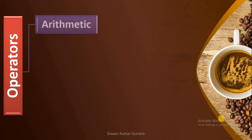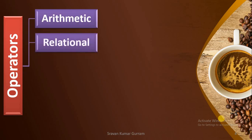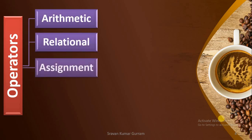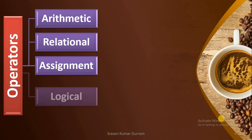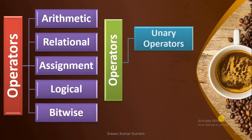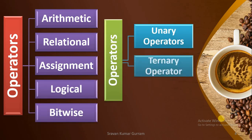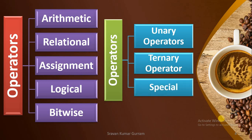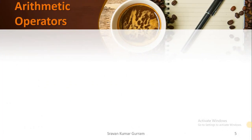In the last video, we started the concept of operators and we have seen what is a unary operator, binary operator and different types of operators available in Java. Coming to the categories of operators, the first category is Arithmetic operators. So now we are going to discuss about Arithmetic operators.